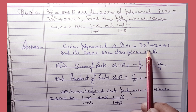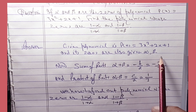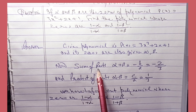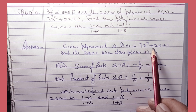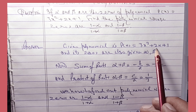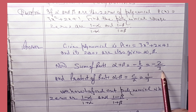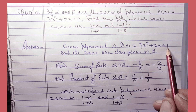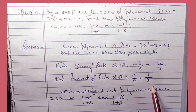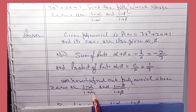For solving this, first we write alpha and beta of the given polynomial p(x) = 3x² + 2x + 1. As you know, sum of roots: α + β = -b/a. Here b = 2 and a = 3, so α + β = -2/3. And product of roots: α × β = c/a. Here c = 1 and a = 3, so α × β = 1/3.